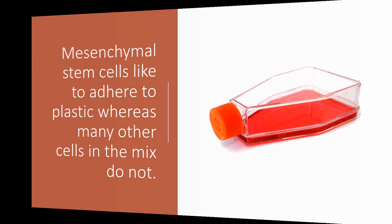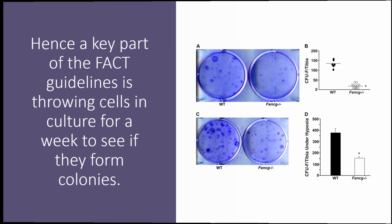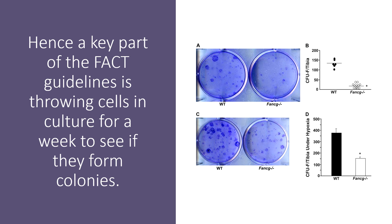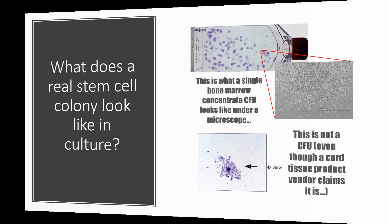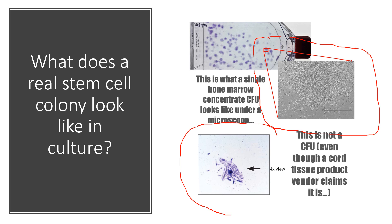Plastic adherence: mesenchymal stem cells like to adhere to plastic, whereas other cells in the mixed cell population don't. A key part of the FACT guidelines is placing cells in culture for a week or so to see if they form colonies. On the top, I have CFUs — colony forming units — you can see the dots, the circles. A portion of one of those circles is blown up, and you can see the dense number of cells; it's hard to even differentiate individual cells. On the bottom is what an umbilical cord company claimed as a CFU. There's no comparison — one has tens of cells, the other has thousands.